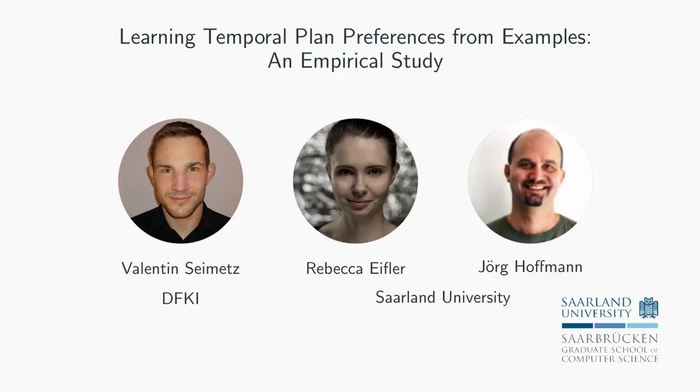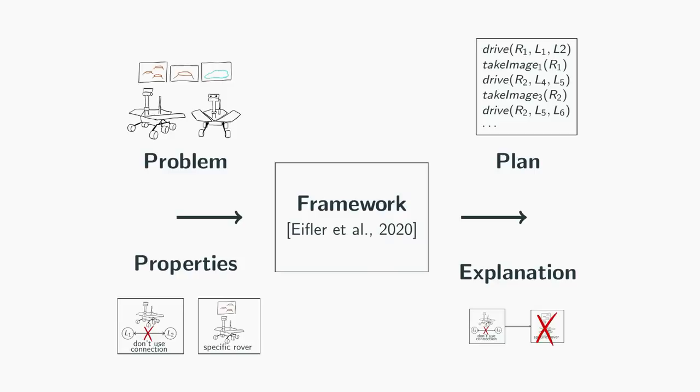Last year we introduced a framework which uses properties or preferences to generate explanations. One drawback of the framework was that the properties need to be given as input by the user. Here we now want to investigate if it's possible to generate these properties or preferences automatically. We are using the following setting.